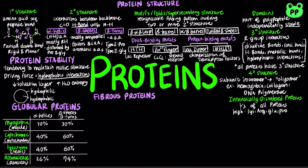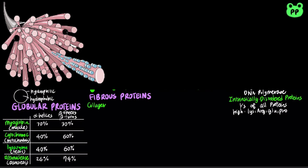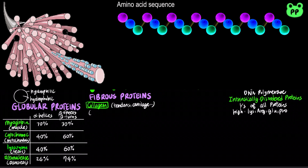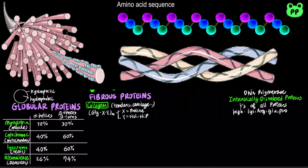Examples of fibrous proteins include collagen, which is a connective tissue found in tendons, cartilage, organic matrix of bone, and the cornea of the eye. It consists of three repeating amino acid residues: the first being glycine, the second being proline, and the third being hydroxyglycine or hydroxyproline. The collagen helix is left-handed and has about three amino acid residues per turn, and the left-handed helices themselves form a right-handed super triple helix.